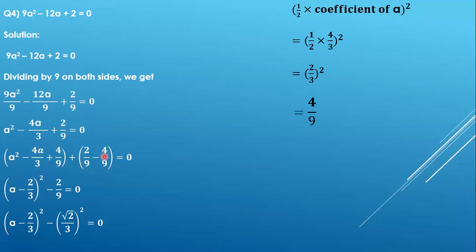And 2/9 - 4/9 will give you -2/9 because the denominator is the same. So 2 - 4 = -2 over 9.